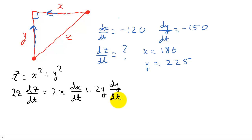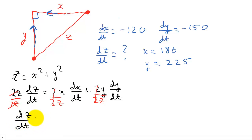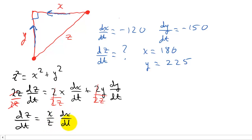We're looking for dz/dt, so let's solve for it. Dividing everything by 2z, the 2s cancel throughout, leaving us with: dz/dt = (x/z) · dx/dt + (y/z) · dy/dt.